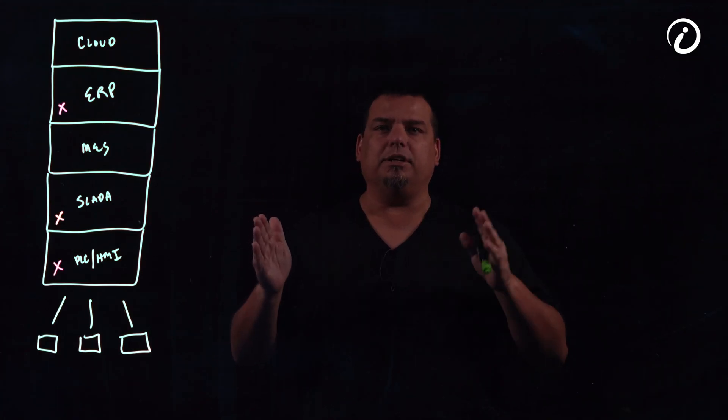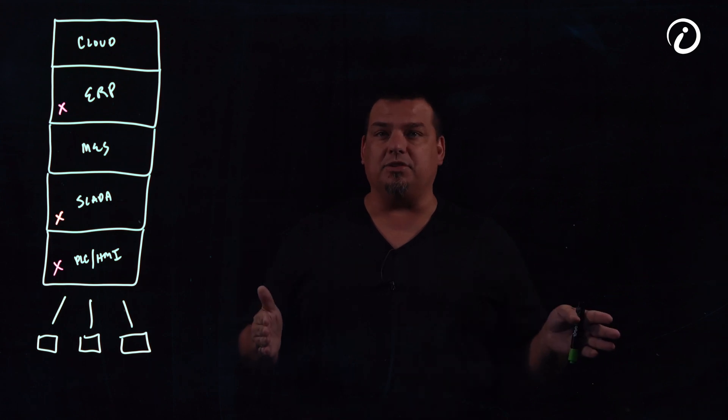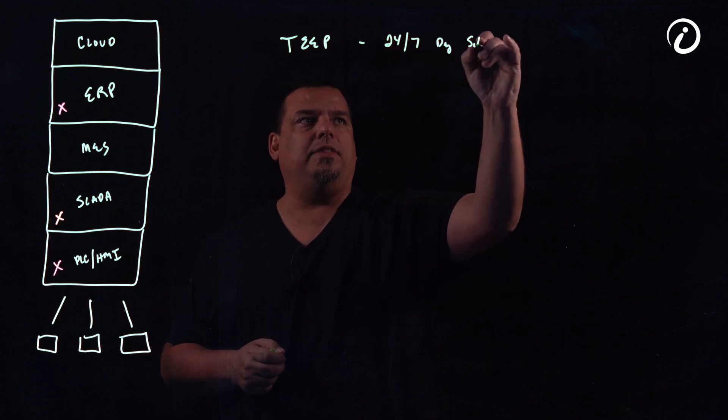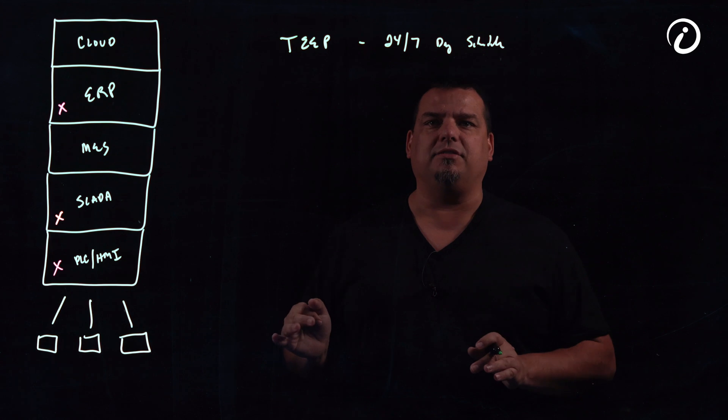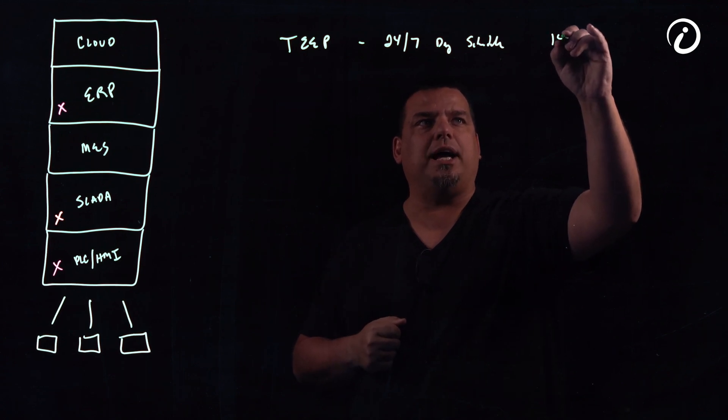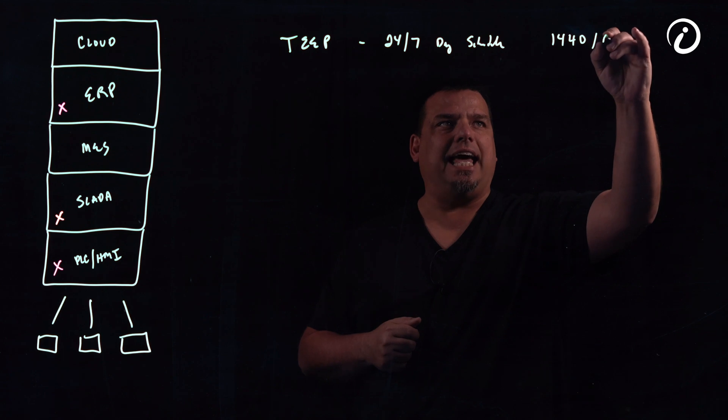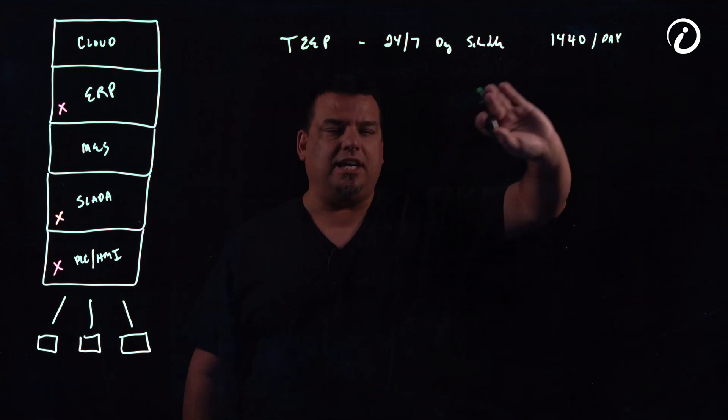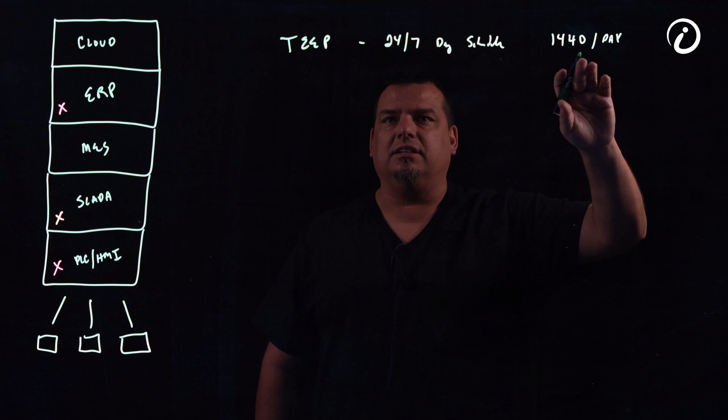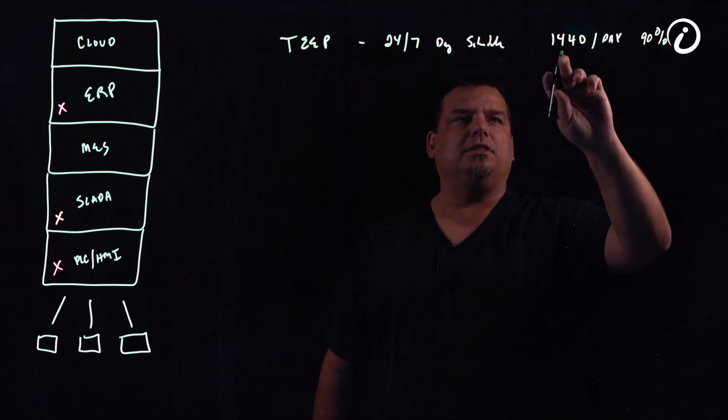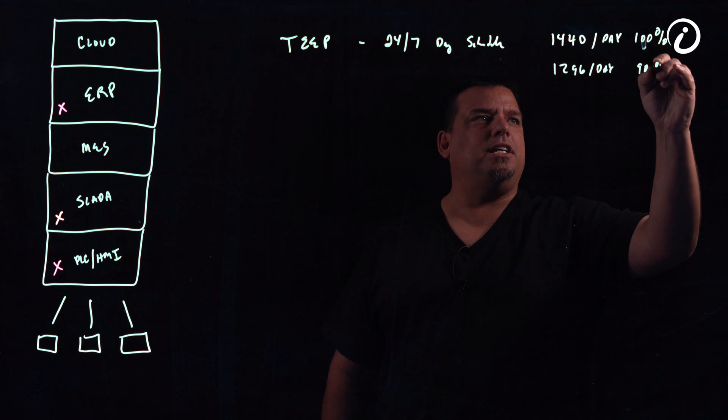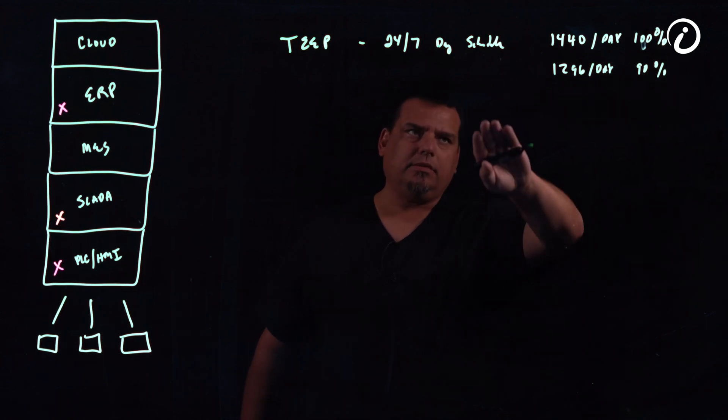OEE—the OEE calculation, overall equipment effectiveness—is a percentage between zero and a hundred percent. There's really two metrics. There's TEEP. TEEP is based on a 24-hour, 7-day schedule. If my machine produces one part per minute, 24 hours a day, seven days a week, that means I could theoretically produce 1,440 parts in a day. The TEEP calculation says if I produce 90 percent, then I produced 1,296. I assure you, no one is operating at 90% TEEP.